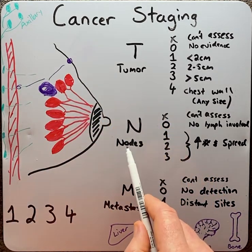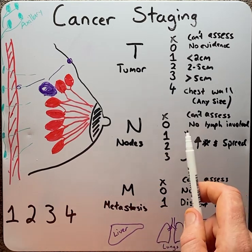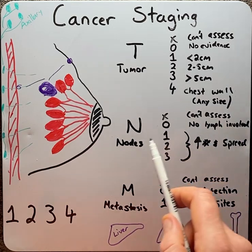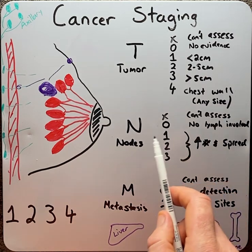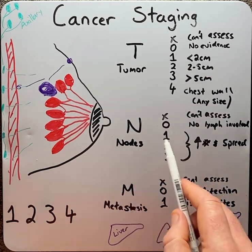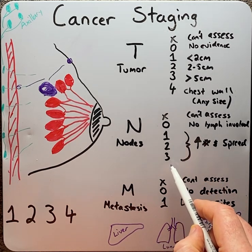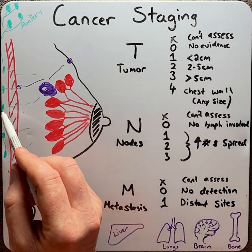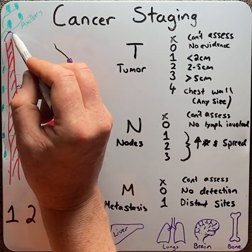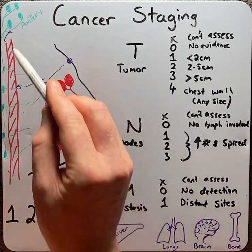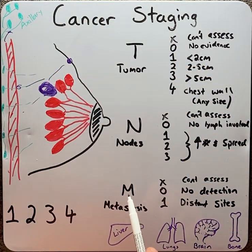Moving to the nodes, or the N. NX means that the doctor was unable to assess for nodal involvement. N0 means that there's no evidence of lymph nodes involved. N1, N2 and N3 — as the number increases, it means that the cancer has involved more nodes, but also has spread to more distant sites, such as the axillary or the armpit and beyond.